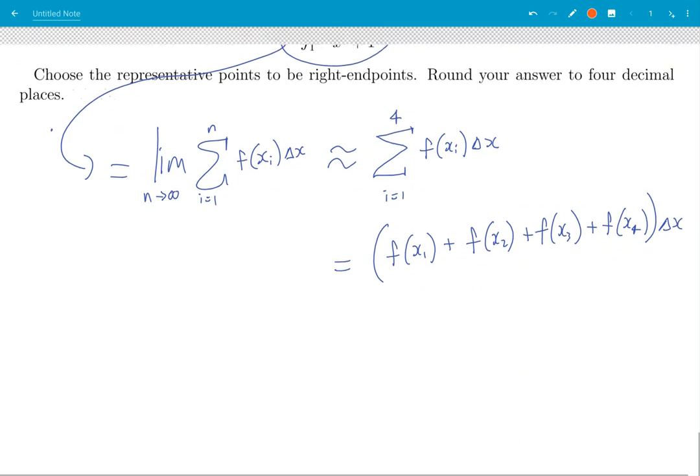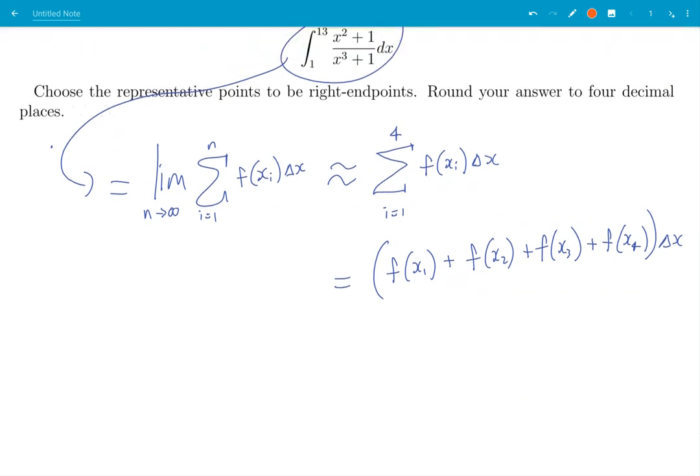The interval is from one to 13 and we're breaking that up into four equal parts. So we got one here, we got 13 here, we're dividing that into four equal parts. That is 12 divided by four, which is three for each of them, so 4, 7, 10, 13.